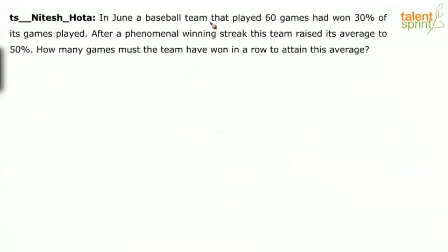In June, a baseball team that played 60 games had won 30% of its games played. After a phenomenal winning streak, this team raised its average to 50%. How many games must the team have won in a row to attain this average?